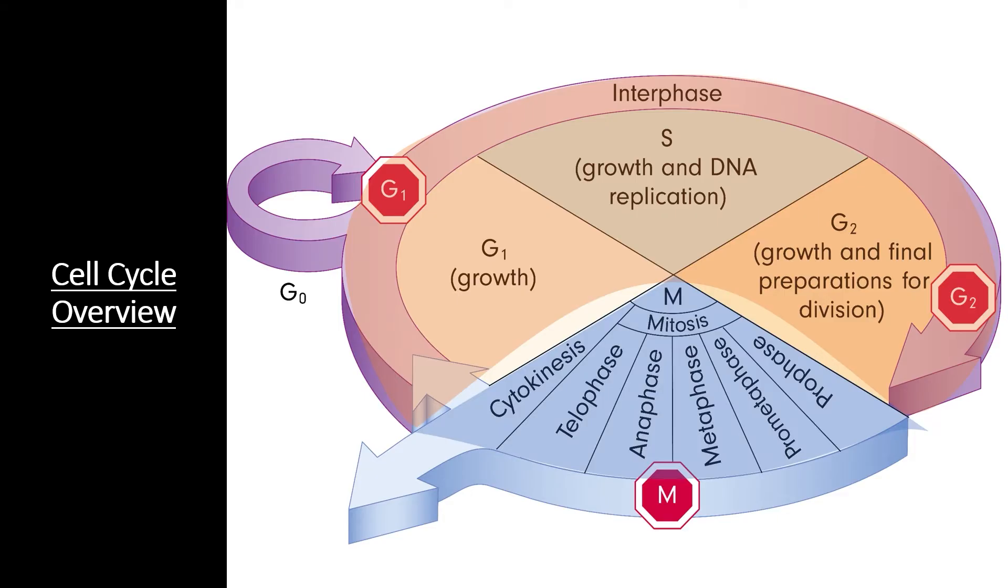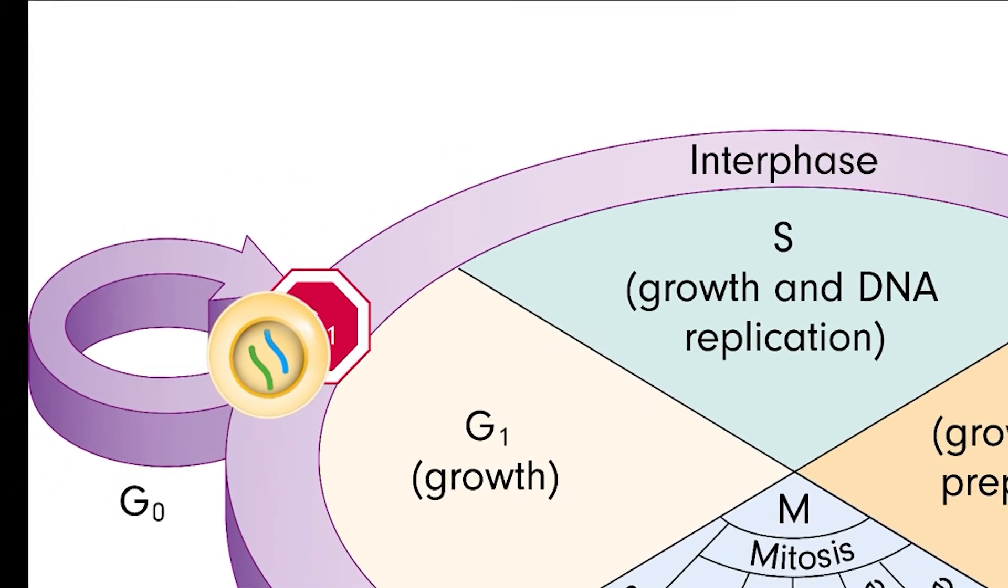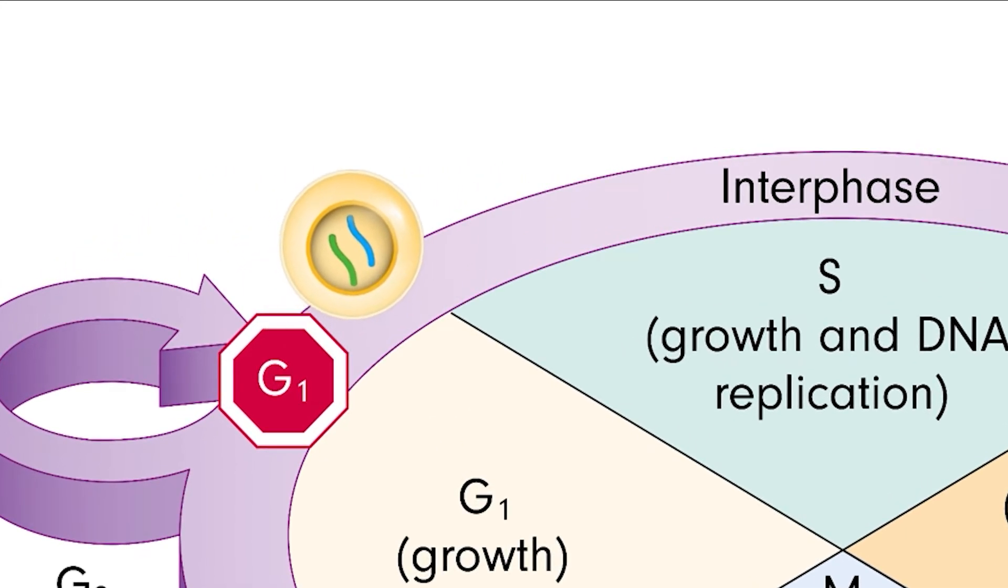Both mitosis and interphase are broken into smaller sections. A cell that has just divided starts into the G1 phase. During this phase, the cell mainly metabolizes energy, creates new proteins and lipids, and grows in size.